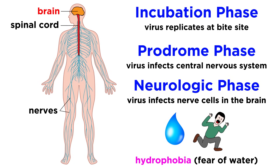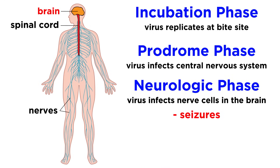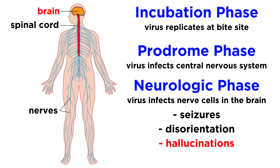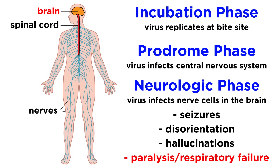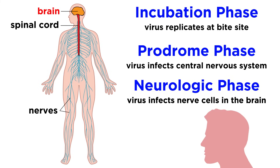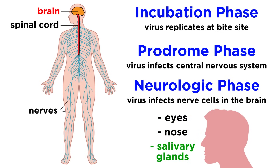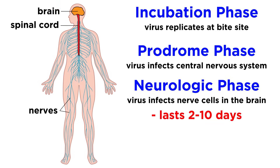That may sound strange, but what's really happening there is it becomes very painful to swallow water. At the same time, many patients experience seizures, disorientation, and hallucinations, and anywhere from 15–60% of people infected experience paralysis, which can lead to respiratory failure. The virus spreads to the skin of the head and neck, including the eyes, nose, and salivary glands, the latter of which can transmit the virus to someone else. After the neurologic phase, which lasts two to ten days, patients typically become comatose.